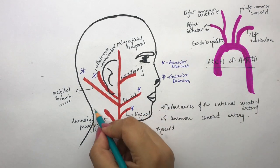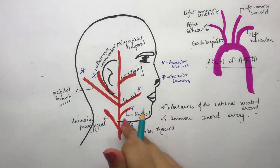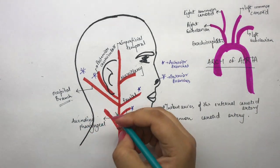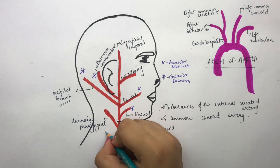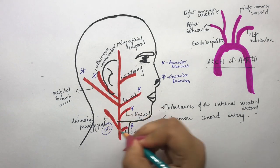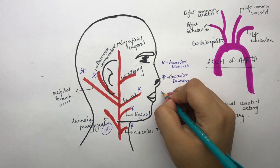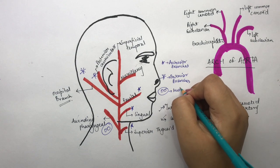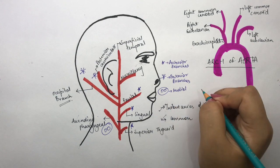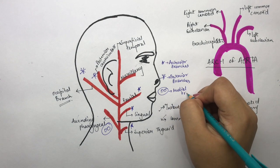Next, the medial branch. There is only one medial branch, and that is the ascending pharyngeal branch, as it travels medially.